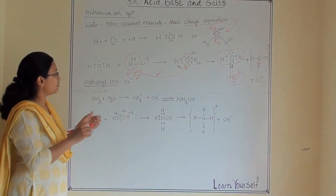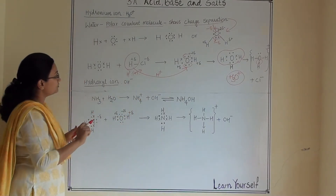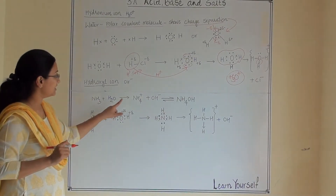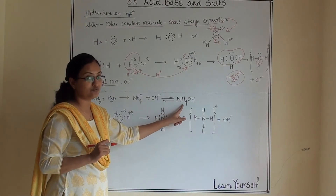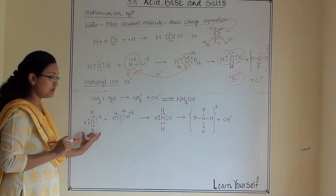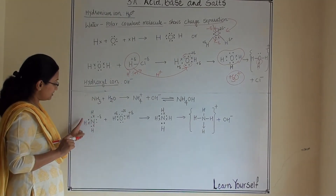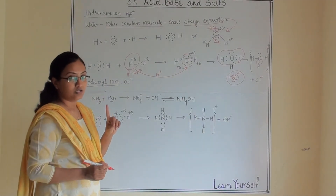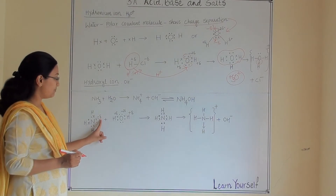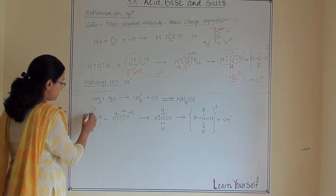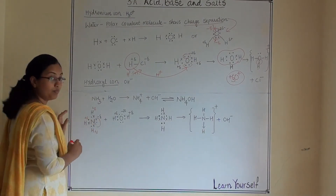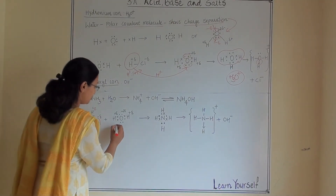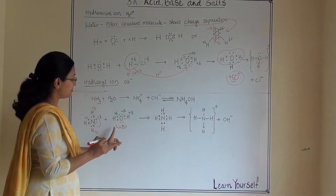Now what will happen in the case of hydroxyl ion? When ammonia mixes with water it gives NH4+ and OH minus — NH4OH is a base. Ammonia has 3 hydrogen atoms, and nitrogen also has one unused lone pair of electrons, so it carries one delta negative charge and the hydrogen atoms carry delta positive charge. A charge separation can be observed within the molecule. The water molecule also has a charge separation.